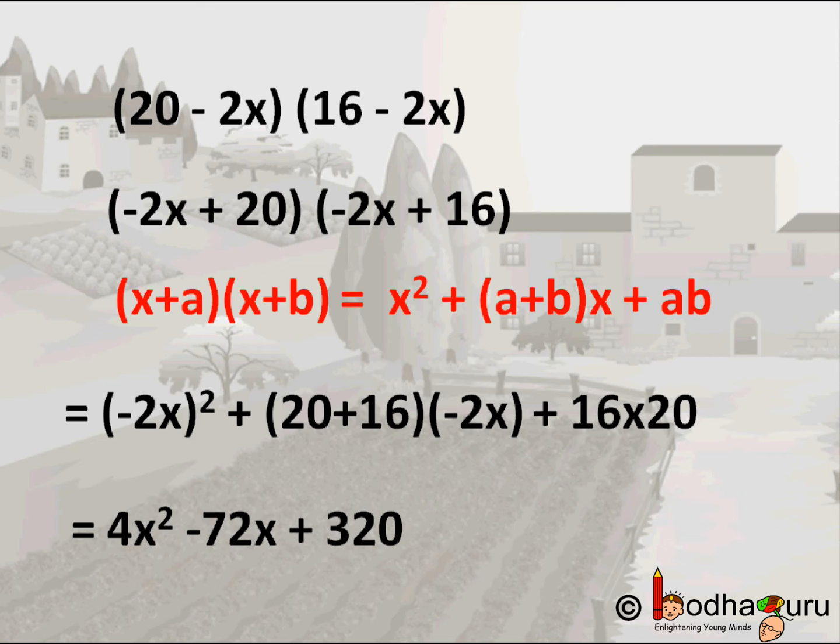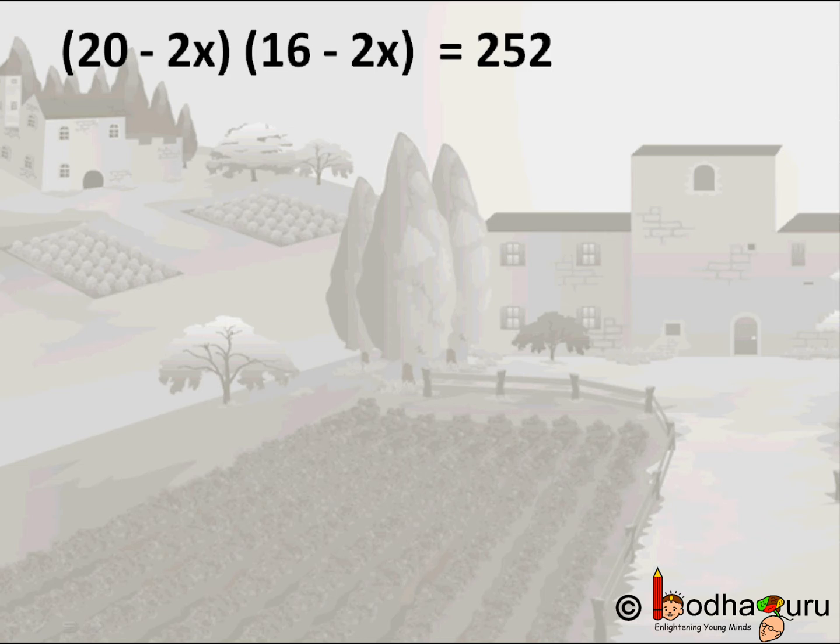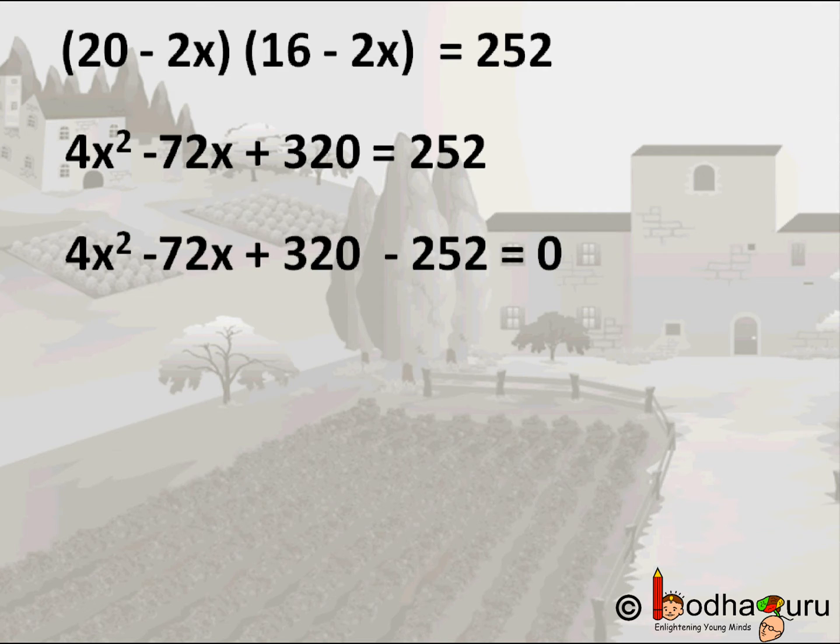After simplifying we finally get 4x² - 72x + 320. So we started with (20-2x)(16-2x) = 252 and we got 4x² - 72x + 320 = 252. Now we bring 252 to the left side, it becomes -252. So 4x² - 72x + 320 - 252 = 0. That is 4x² - 72x + 68 = 0.